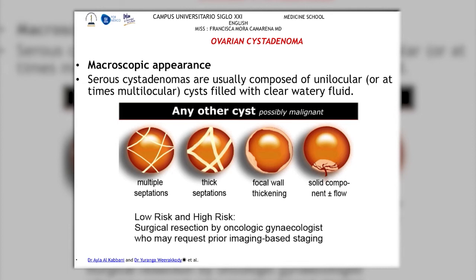When we talk about macroscopic appearance, serous cystadenomas are usually composed of unilocular or multilocular cysts filled with clear watery fluid. A characteristic feature is that this fluid is really clear. As seen in this picture, we can find septations that can be very thin or very thick, and solid components. There will be low-risk and high-risk presentations, and treatment should be managed by a specialist — most appropriately a gynecologic oncologist.